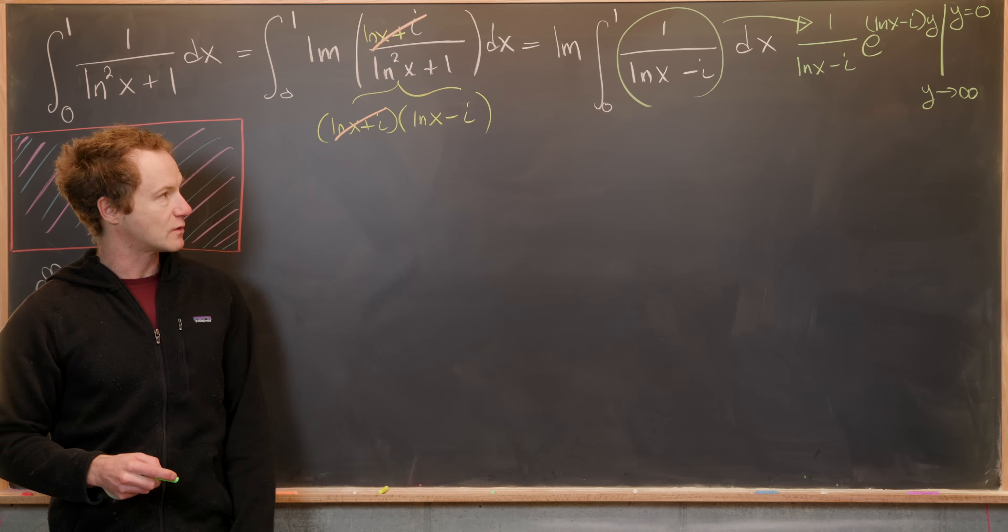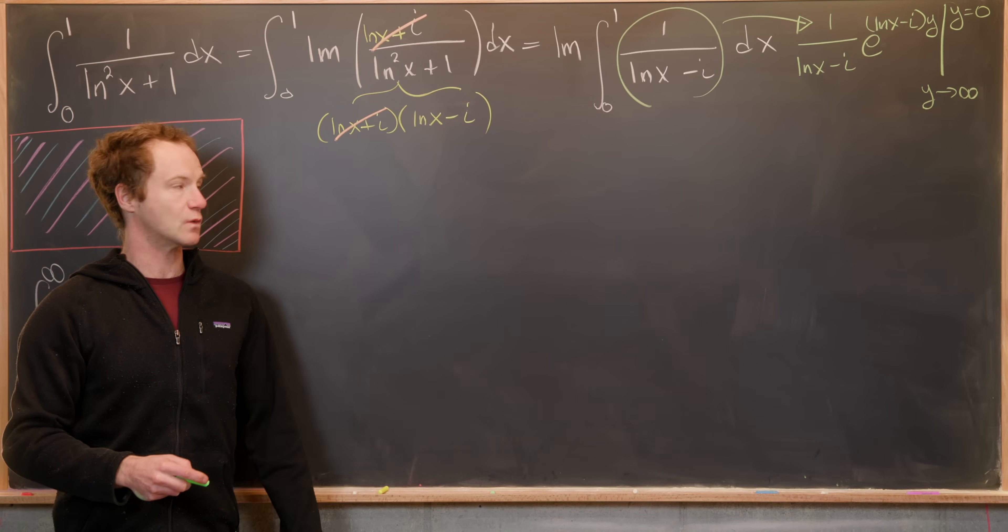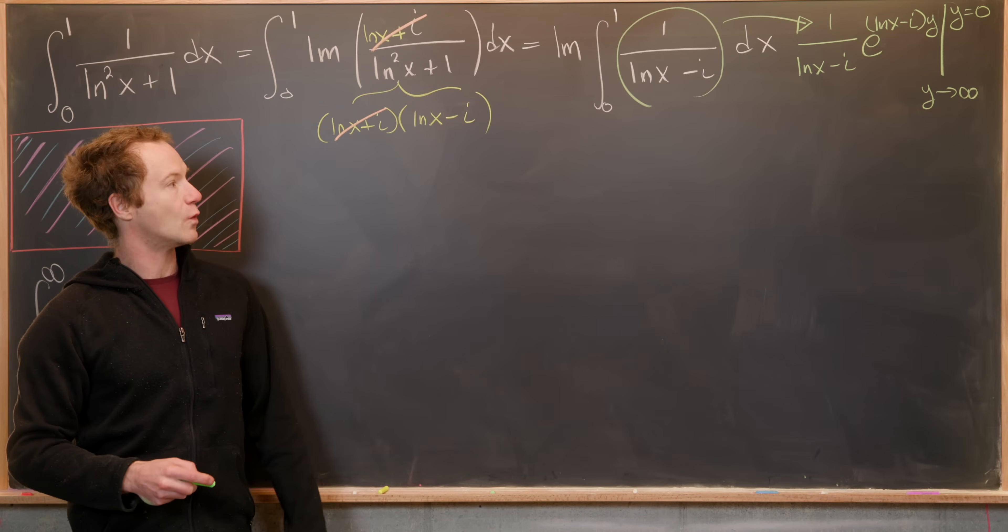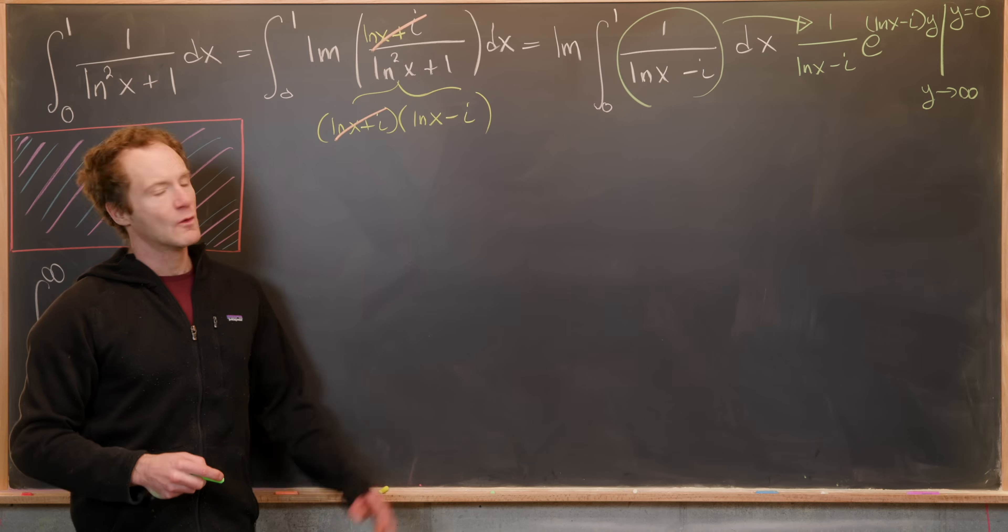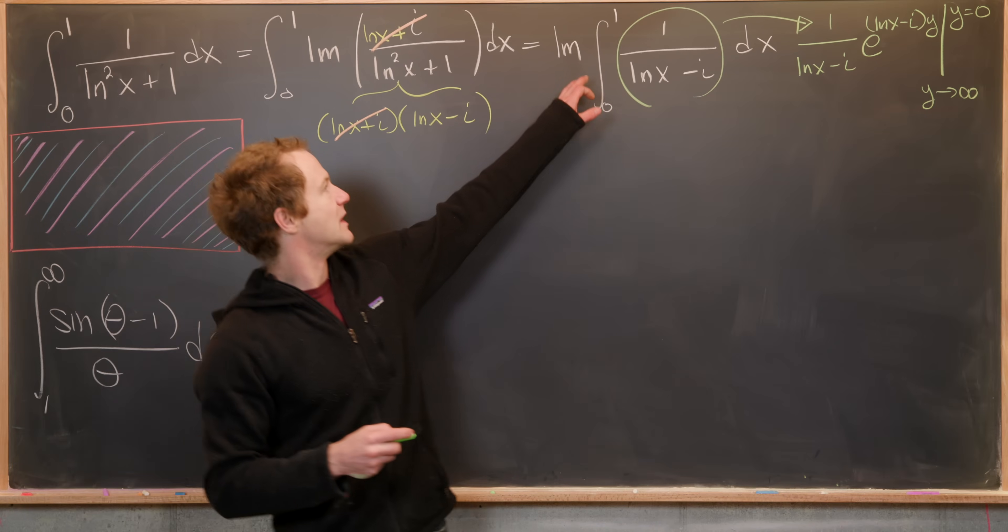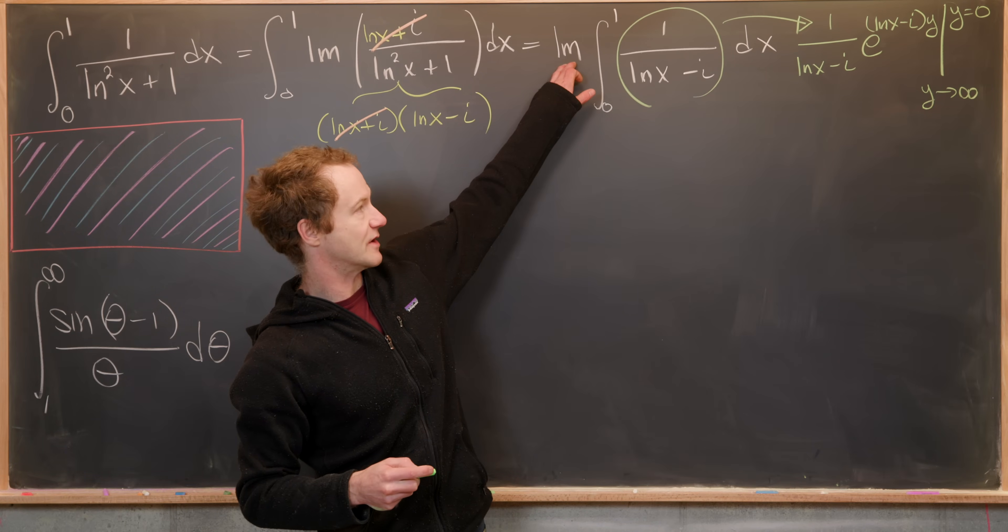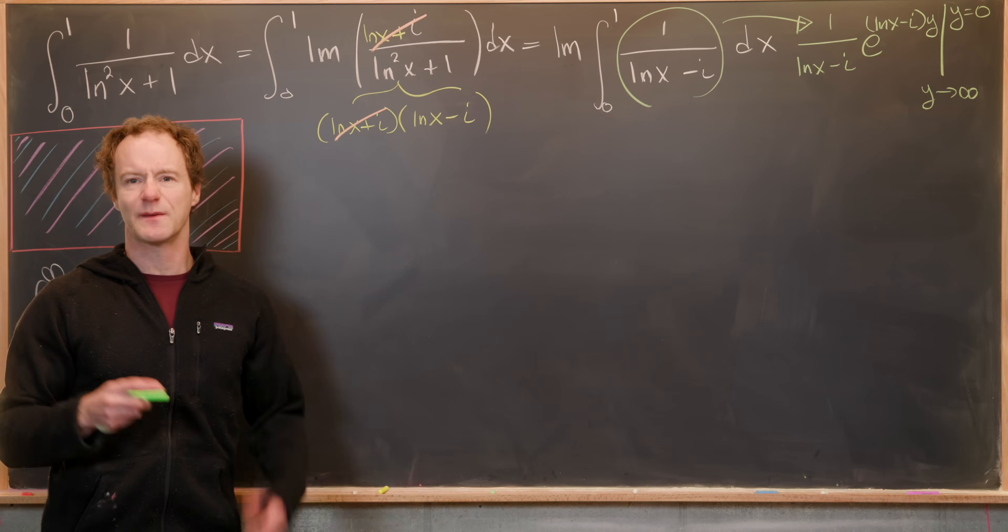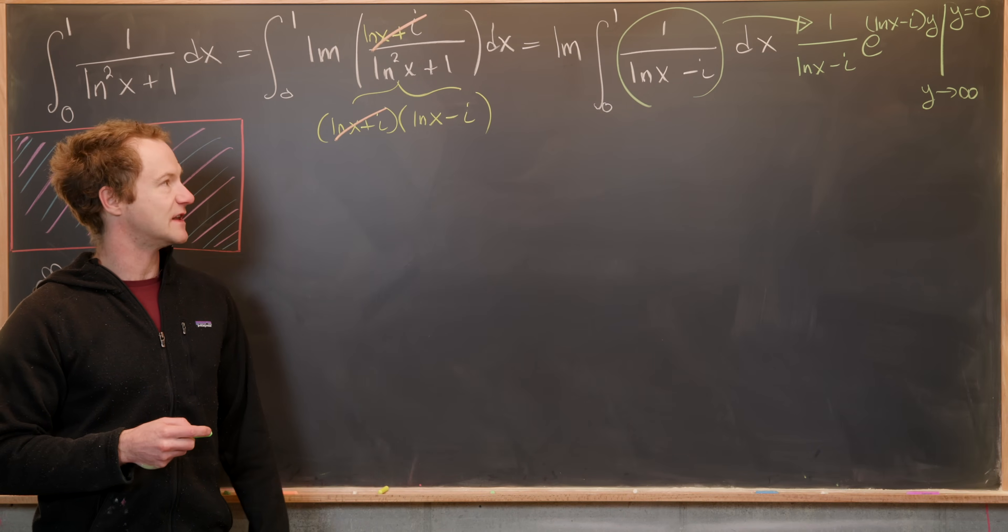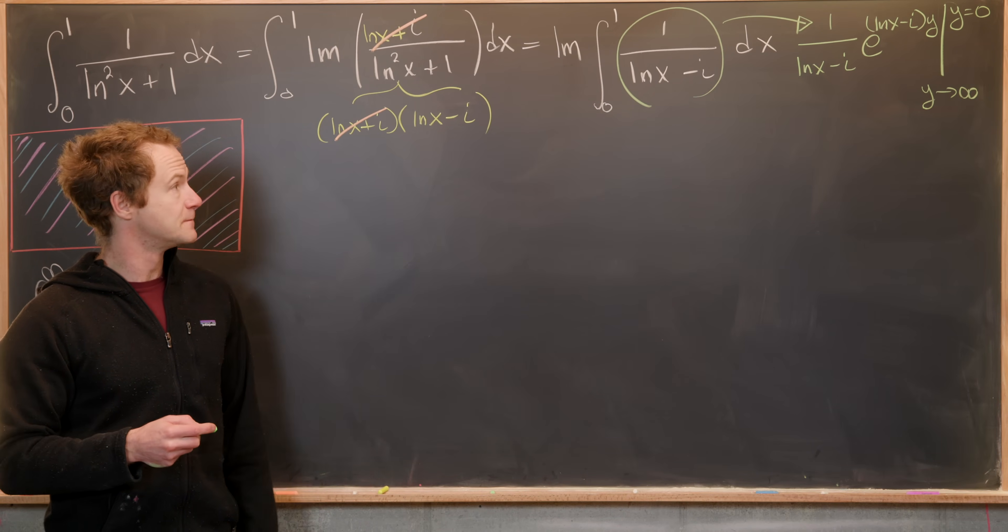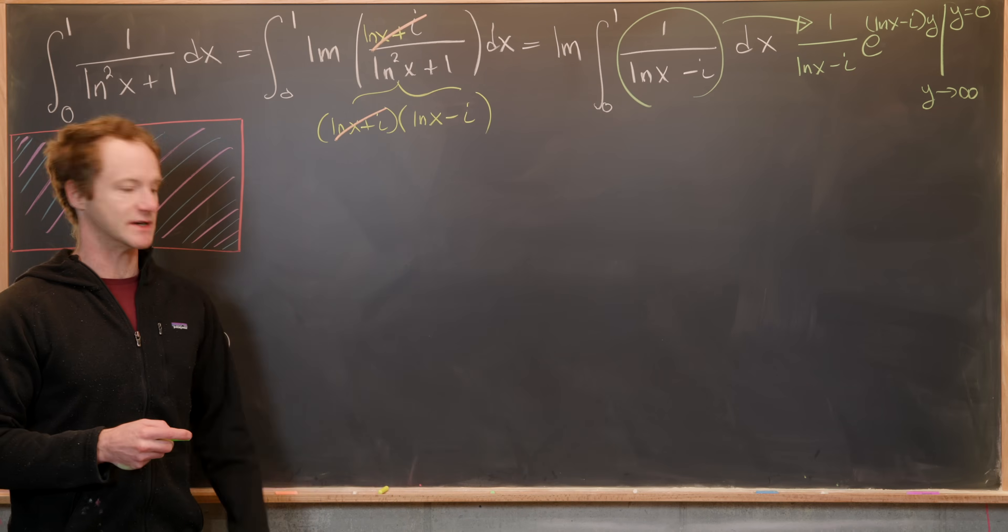And then we're evaluating that from y approaching infinity to y equals zero. Notice approaching that at y equals zero, we get e^0, which is one. And then as y approaches infinity, it looks like there might be a problem there. But notice since we're taking the imaginary part, we'll actually get something that looks like e^(-∞). So that cancels out to zero. And so we end up exactly with what I have circled here.